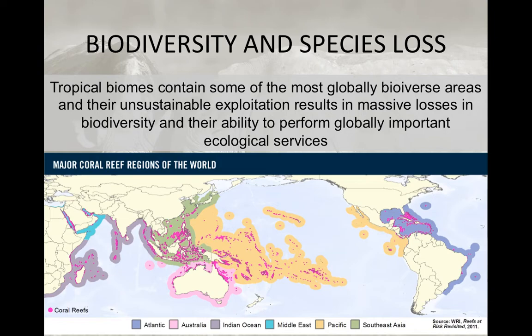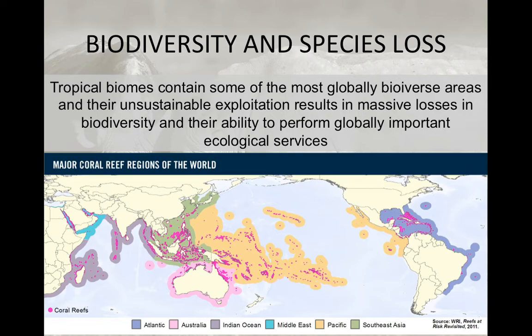So how do we address this? We need to affect the tropical biomes — regions with the most biodiverse areas that have been unsustainably exploited, often with low economic income. These regions are often not well-documented, so we don't even know what we're losing. When we lose these organisms, we lose the ability of these biomes to perform globally important ecological services. Coral reefs, for example, don't just provide for their local environments — they provide nursery habitat for baby fish that travel throughout the larger ocean, which in turn provides for humans on land through fishing.